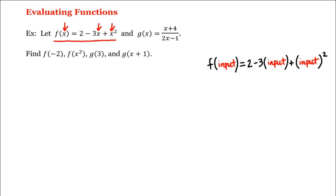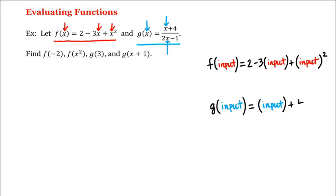Now what about the function g? We're given that g of x is equal to x plus 4 divided by 2x minus 1. So when we are evaluating g at any input, we put the input here as well as here. Namely, g of any input is equal to that input plus 4 divided by 2 times that input, minus 1.